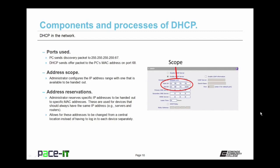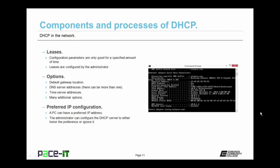If you didn't use address reservations, there's the possibility that your default gateway's IP address might change. Address reservations allow these addresses to be changed from a central location instead of logging into each device separately. Part of the DHCP process involves leases — the DHCP server hands out IP configuration information but sets a time limit for how long that configuration is good. The administrator can configure how long the leases are.